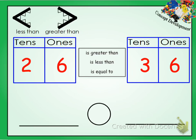So looking at this, we know that whenever we are comparing these two numbers, we're going to look at the bigger place value. The greater place value, which we know in this case is the tens place.